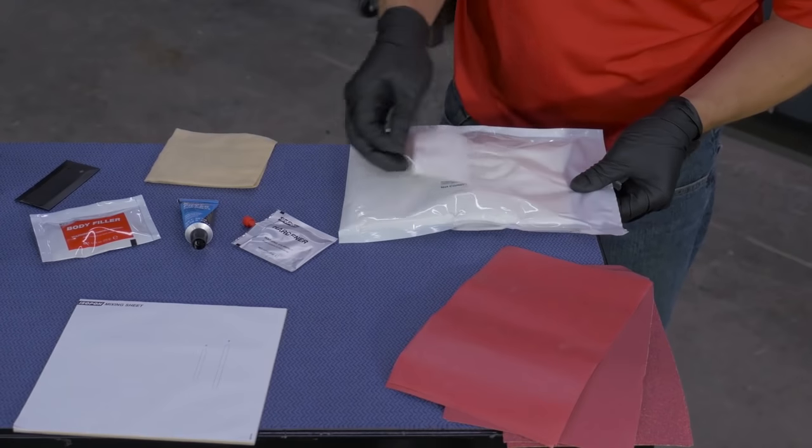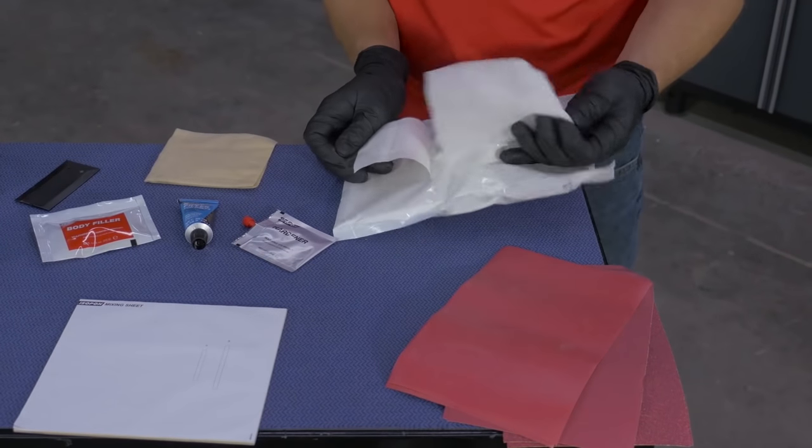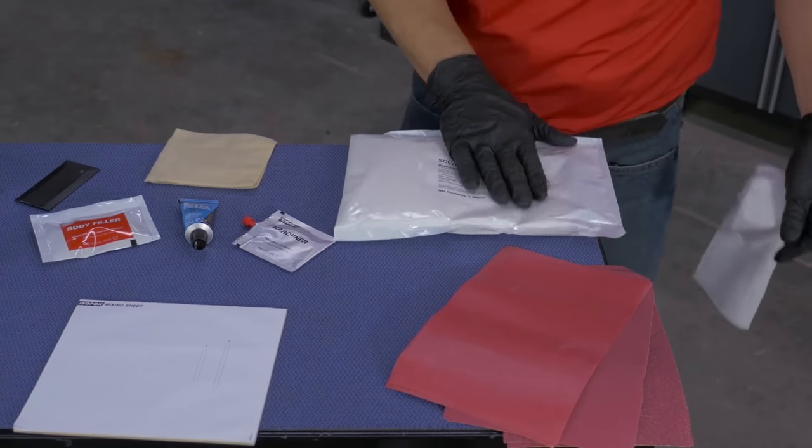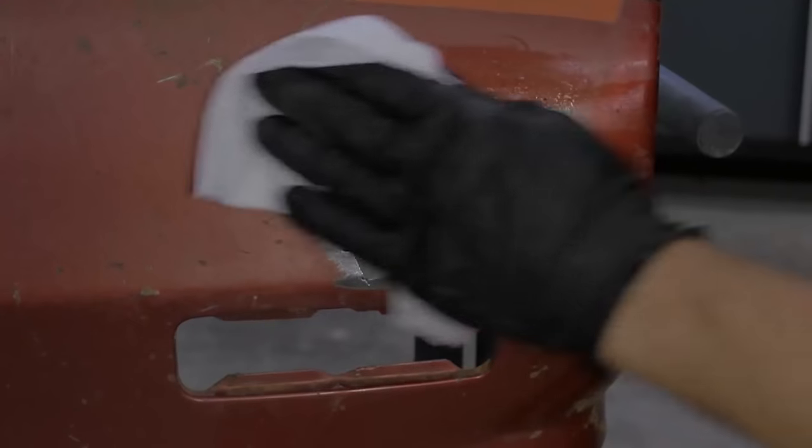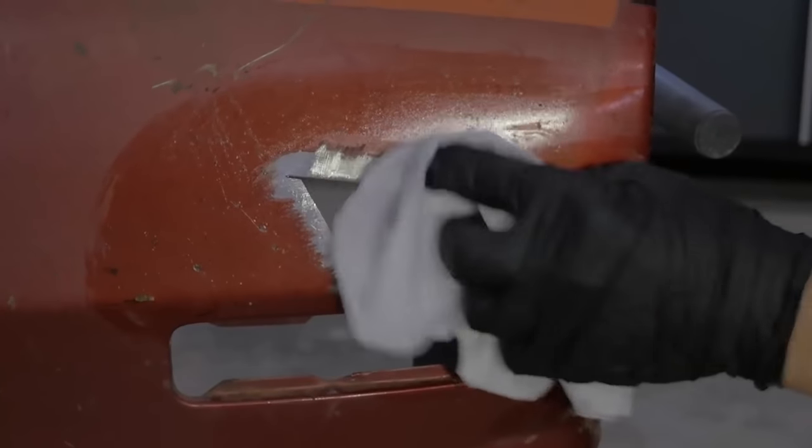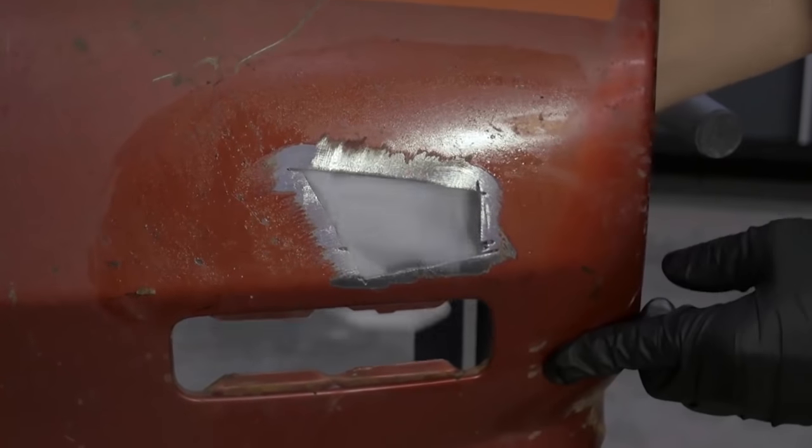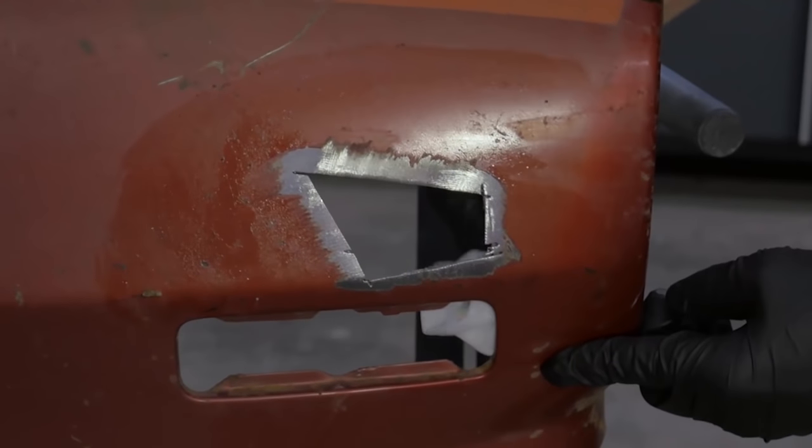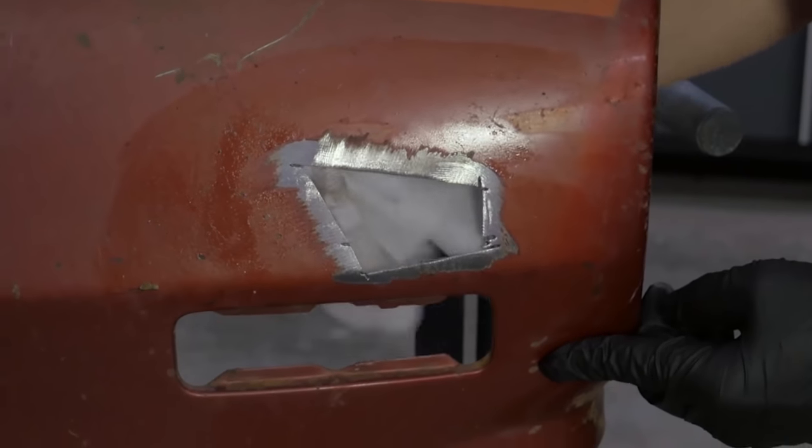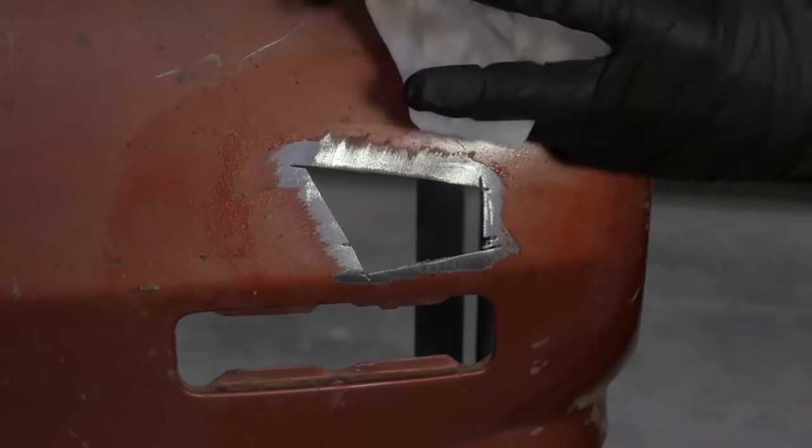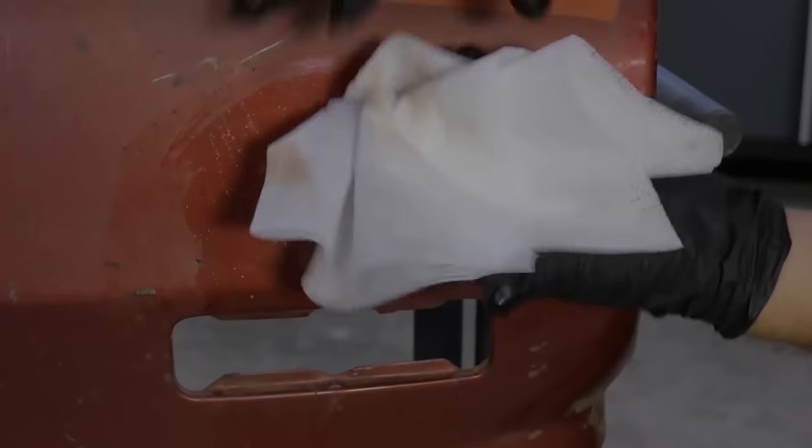The solvent wipes come in a convenient resealable package. We're just going to take one for now. Using the solvent wipe we're going to clean both the front and the back side of our repair panel. That way our tape that is going to be used to adhere the mesh can definitely stick through the repair process.